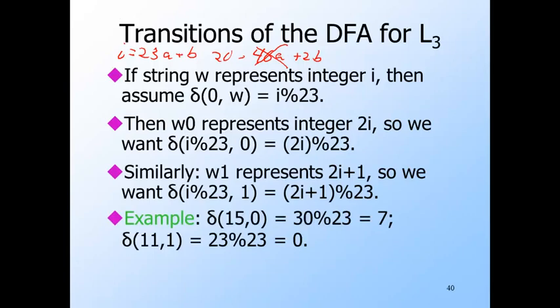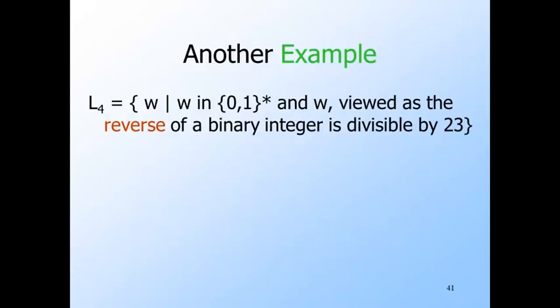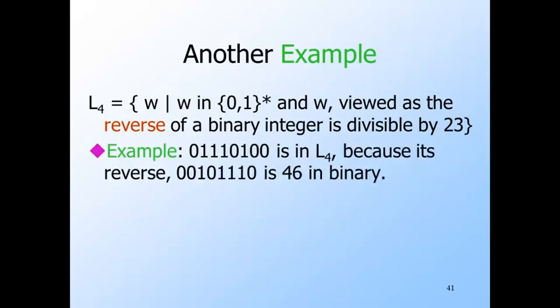For example, twice 15 is 30, so from state 15 we go to state 7 (the remainder of 30 divided by 23) when the input is 0. From state 11 on input 1, we go to the state that is the remainder of 2×11+1 = 23 divided by 23, which is state 0. So whenever a string gets you to state 11 — meaning the string leaves a remainder of 11 when divided by 23 — that string followed by a 1 must be divisible by 23 and therefore accepted. Interestingly, another regular language is the set of all binary strings that, when read backwards (low-order bit first), form a binary integer divisible by 23. And there's nothing special about 23 — it could be any number in both this and the previous example.